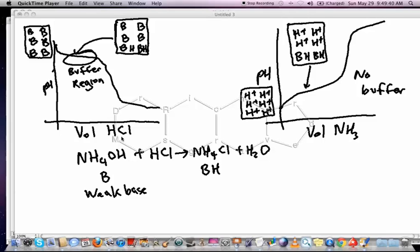As we add the HCl, we don't get a huge drop in pH. It's kind of flat because we're adding HCl to a buffer solution, a mixture of a weak base and its conjugate acid.